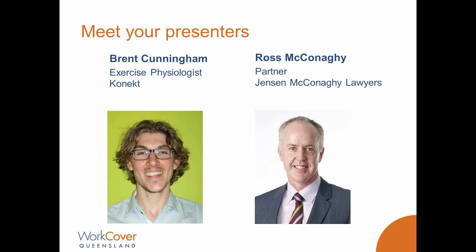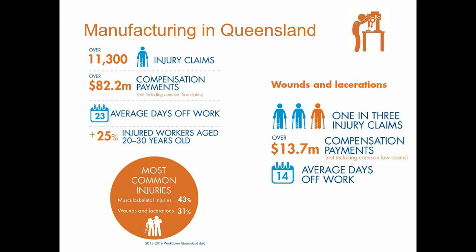So why are minor injuries important? In 2015-16, within the manufacturing sector, more than 31% of all injuries arose out of wounds and lacerations — the second most common injury type after musculoskeletal injuries. But this trend is not isolated to manufacturing; similar injury types and frequency can also be seen within agriculture, retail, wholesale, construction, mining and labour hire. While seemingly innocuous, these injuries resulted in over $13 million in compensation payments and an average of 14 days off work.